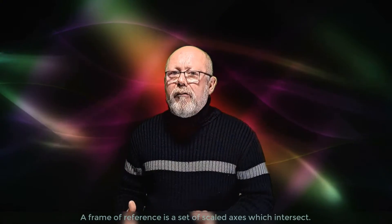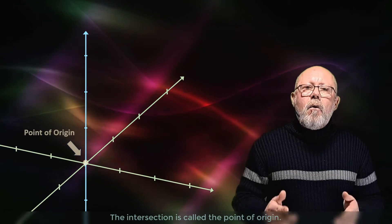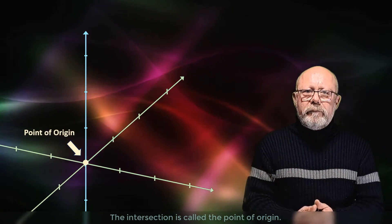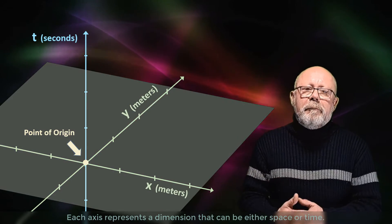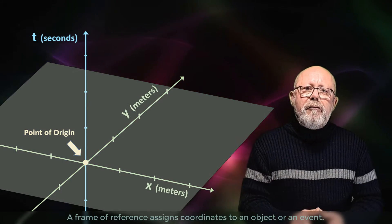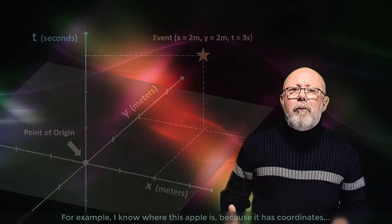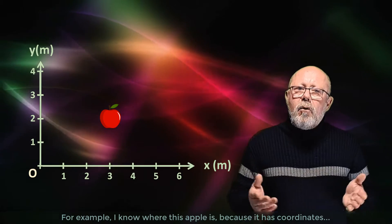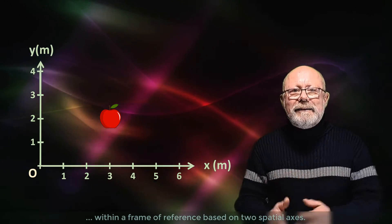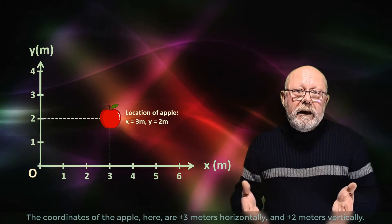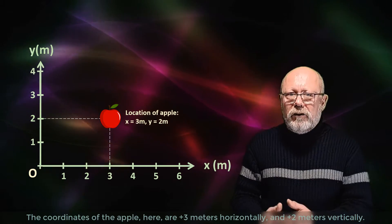A frame of reference is a set of scaled axes which intersect. The intersection is called the point of origin. Each axis represents a dimension that can be either space or time. A frame of reference assigns coordinates to an object or an event. For example, I know where this apple is because it has coordinates within a frame of reference based on two spatial axes. The coordinates of the apple here are plus 3 meters horizontally and plus 2 meters vertically.